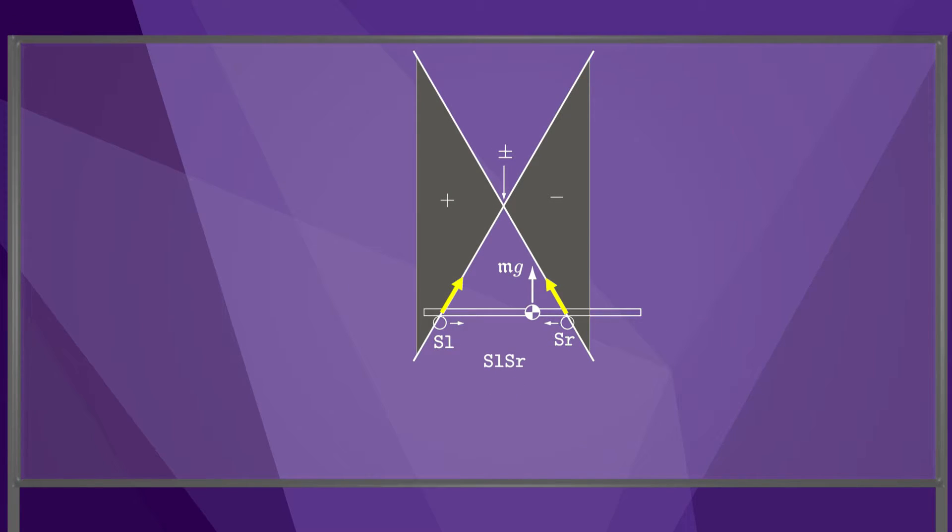If both fingers slide, as shown here, each contact force lies on the inner edge of its friction cone. Again, the moment labels show that the fingers cannot quasi-statically balance gravity.